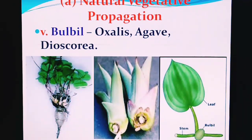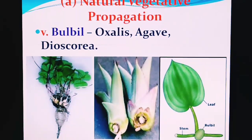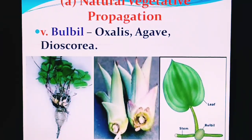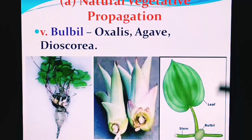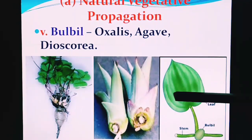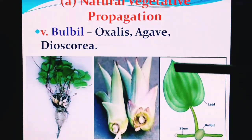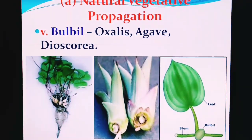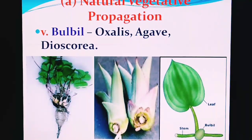Beyond that, there is the bulbil — again a bud used by the plant itself for creating a new plant on its own, making it natural vegetative propagation. Best examples of bulbil are oxalis, agave, and Dioscorea. In Dioscorea, the leaves have veins that are more in number and converge at a point — this is called multicostate convergent venation. This is another example of natural vegetative propagation by bulbil.